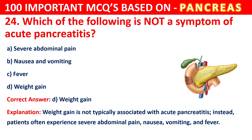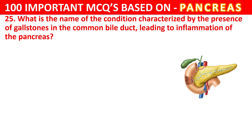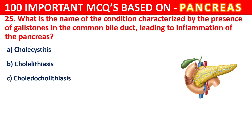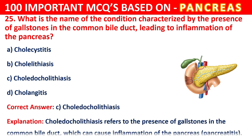Question 25. What is the name of the condition characterized by the presence of gallstones in the common bile duct, leading to inflammation of the pancreas? Your options are Cholecystitis, Choledocholithiasis, or Cholangitis. The correct answer is Choledocholithiasis. Choledocholithiasis refers to the presence of gallstones in the common bile duct, which can cause inflammation of the pancreas.